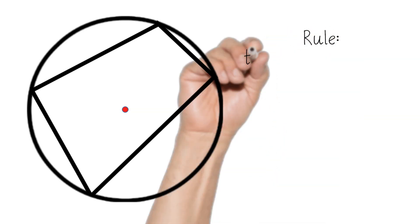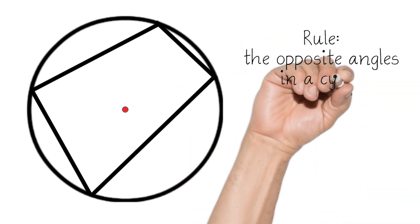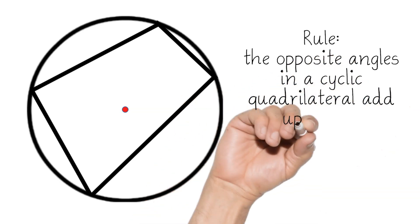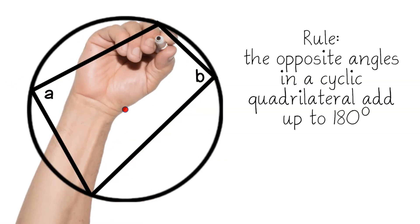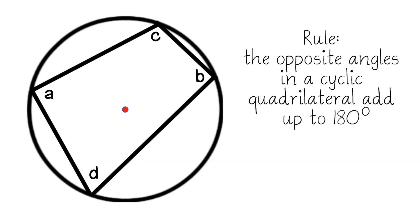is that the opposite angles in a cyclic quadrilateral add to 180 degrees. So if I look at my first pair of opposite angles a and b they add to 180 degrees, and if I have c and d they're opposite so they would also add to 180 degrees.